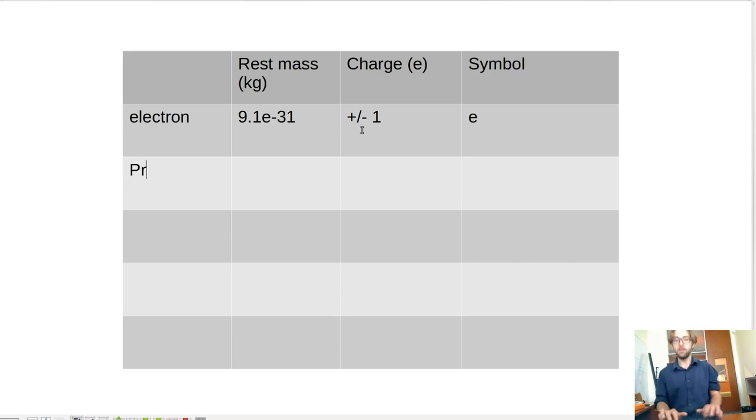Then there are protons. So protons have a mass of 1.672 E to the negative 27 kilograms. So, not really heavy, but still much heavier. And protons have a charge of plus 1. We denote them with the symbol P.